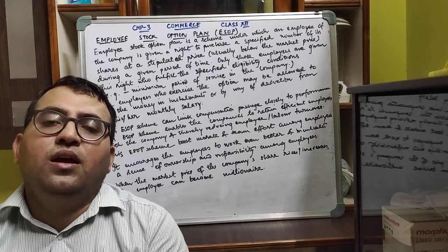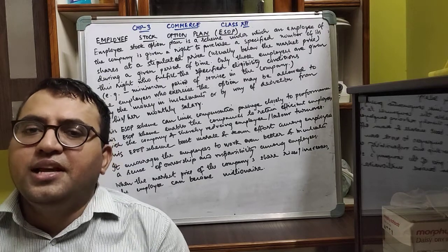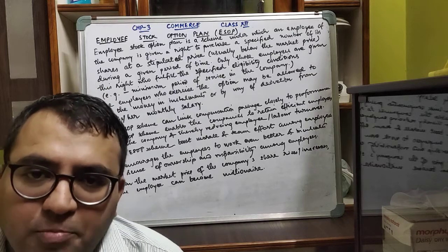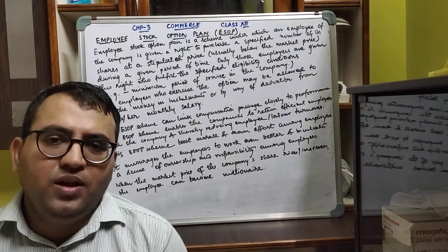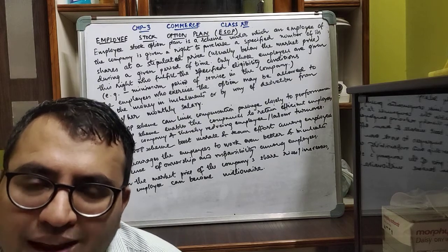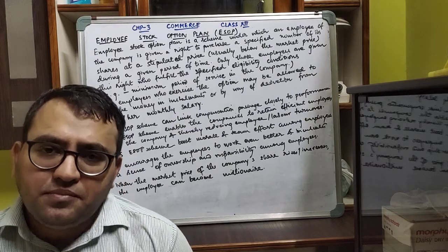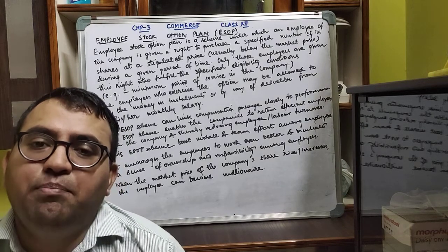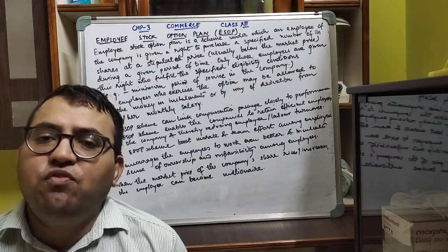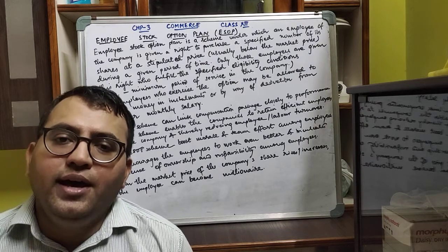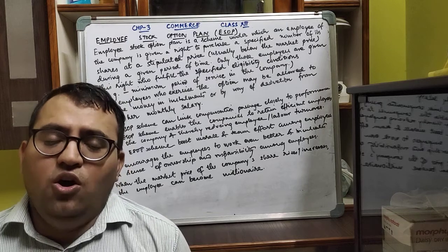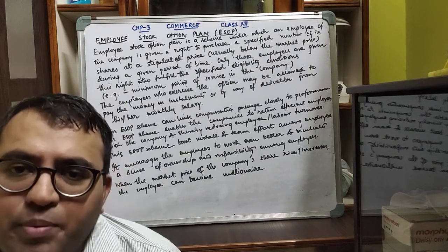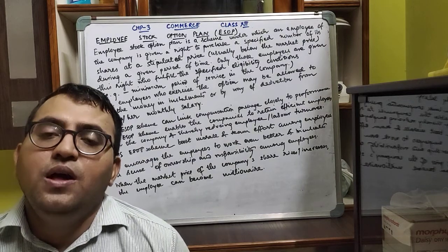Students, as we have done Chapter 3 of Commerce Class 12, now we are doing the next topic, that is ESOP. ESOP stands for Employee Stock Option Plan. This ESOP plan is linked to the performance of the employees, and this is a formal scheme where the company gives the rights to the employees to purchase a specified number of shares.